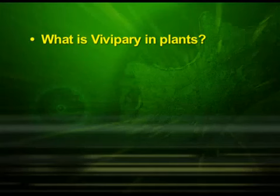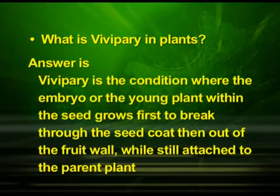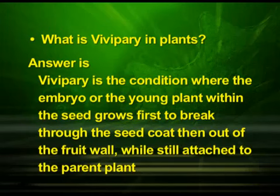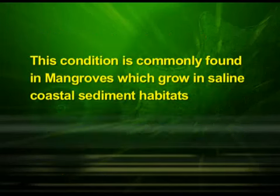The point was: what is vivipary in plants? The answer is that in plants, vivipary is the condition where the embryo or the young plant within the seed grows first to break through the seed coat, then out of the fruit wall while still attached to the parent plant. This condition is commonly found in mangroves, which grow in saline coastal sediment habitats.